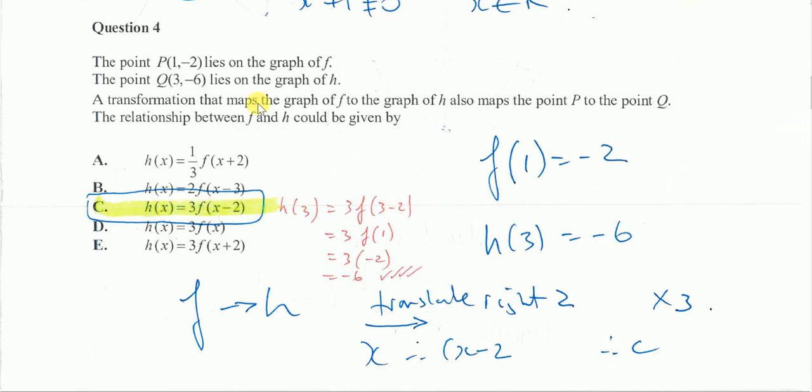In number four, I'm going from point P to point Q. So I'm going from (1, -2) down here, to Q, which is (3, -6). Okay, so I've gone from (1, -2) to (3, -6).